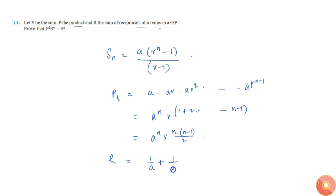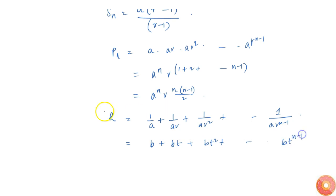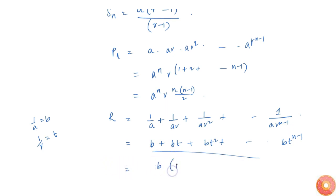R is the sum of reciprocals, that is 1 by a plus 1 by ar plus 1 by ar squared and so on up to 1 by ar power n minus 1. Writing 1 by a as b and 1 by r as t, this becomes a new GP series with n terms, and the sum is b times t power n minus 1 divided by t minus 1.